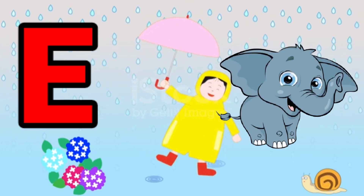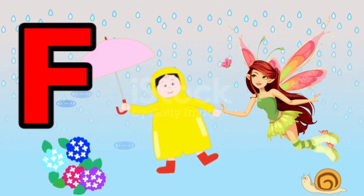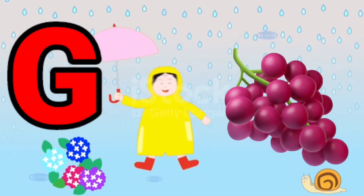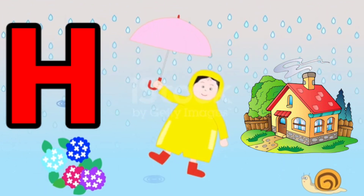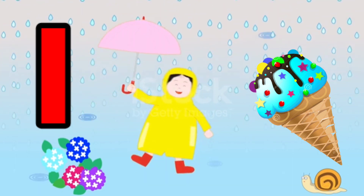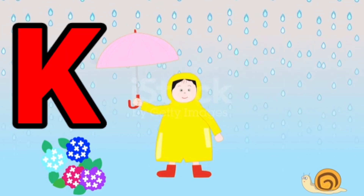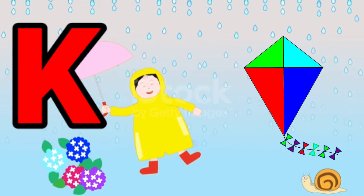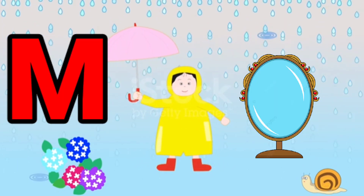D for dog. E for elephant. F for fairy. G for grass. H for home. I for ice cream. J for jelly. K for kite. L for lemon.